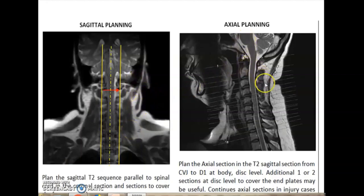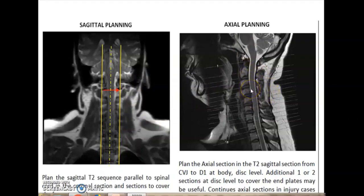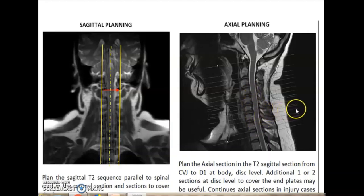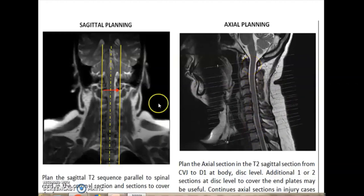Axial planning is routine — a body disc coverage is more than enough. Additional one or two sections at the level of end plates may be useful to demonstrate the discs. For injury patients, continuous axial T2 slices from the cervico-vertebral junction to T1 level have to be done without any gap.